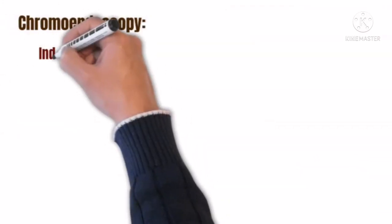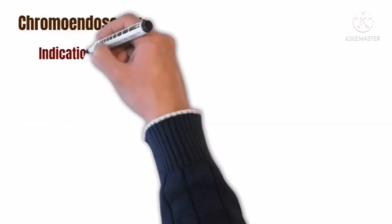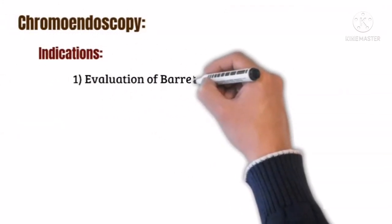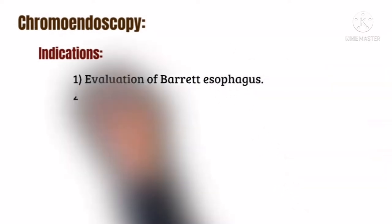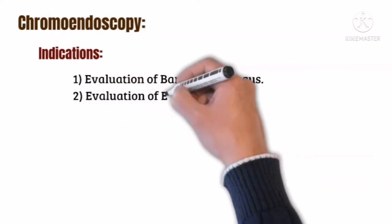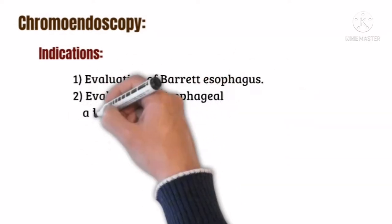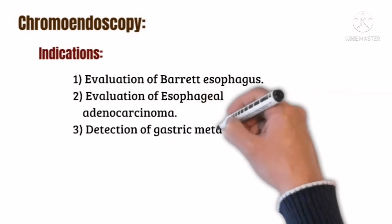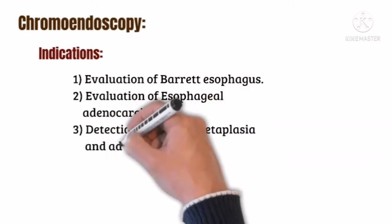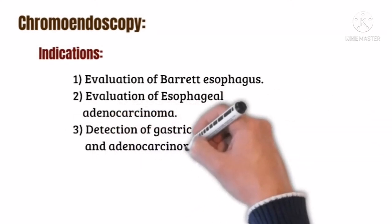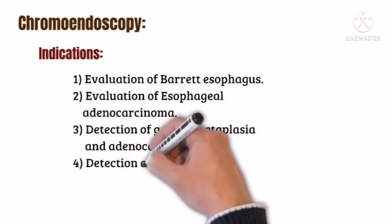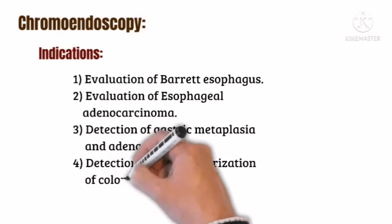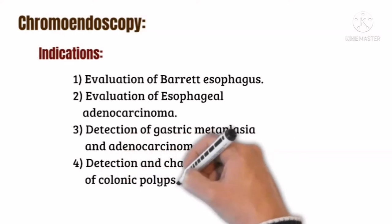Indications of chromoendoscopy include evaluation of Barrett's esophagus, evaluation of esophageal adenocarcinoma, detection of gastric metaplasia and adenocarcinoma, detection and characterization of colonic polyps, and surveillance of IBD.